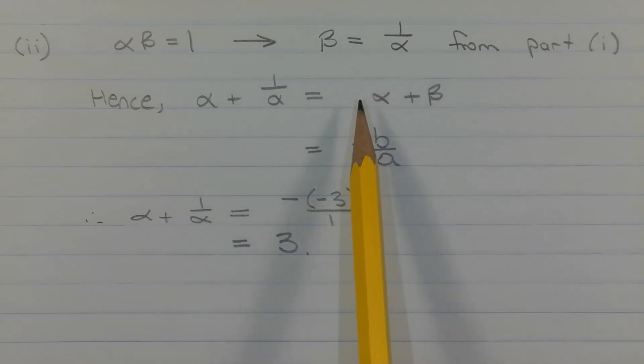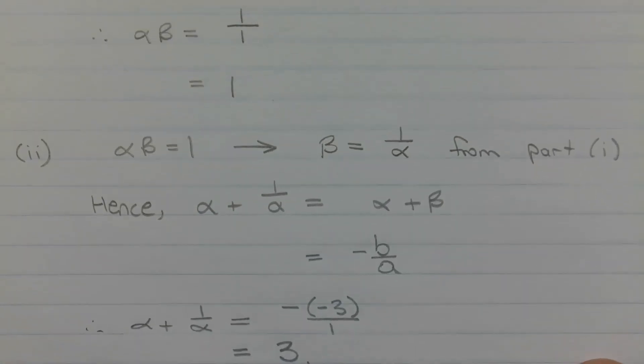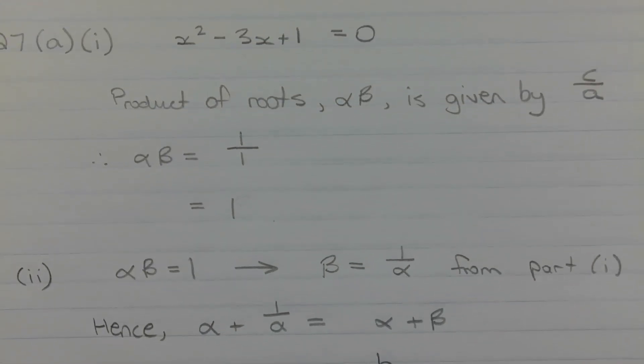And we have the sum of the roots, which is equal to negative b over a, where b is the coefficient of the x term. So if we go back to the quadratic equation, b is negative 3, which is the coefficient of x.